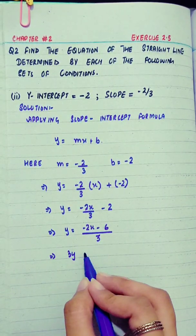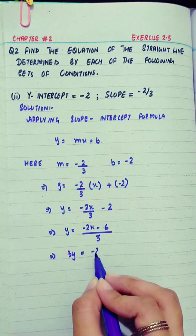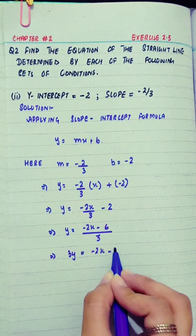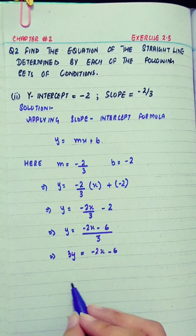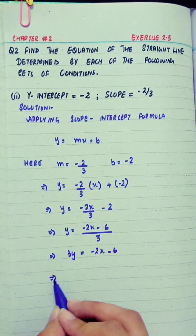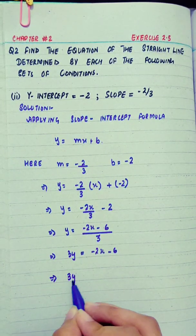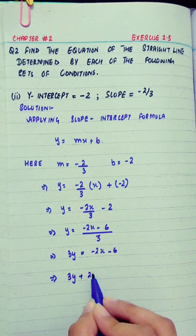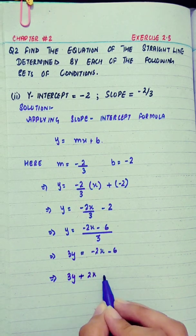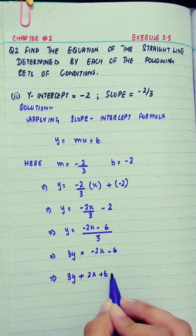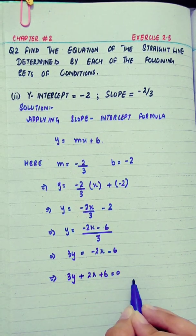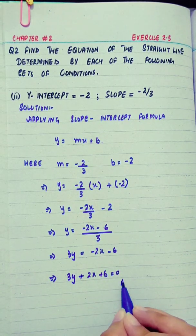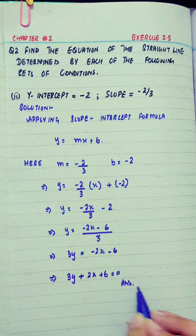Taking LCM of 3: 3y equals minus 2x minus 6. So the equation is 3y equals minus 2x minus 6, or 2x plus 3y plus 6 equals 0.